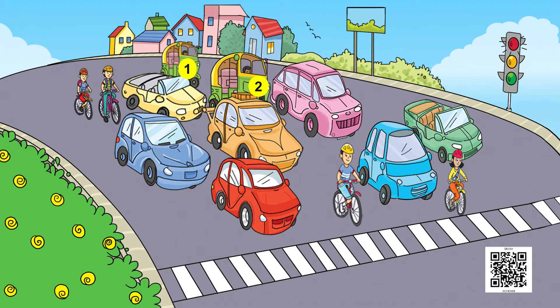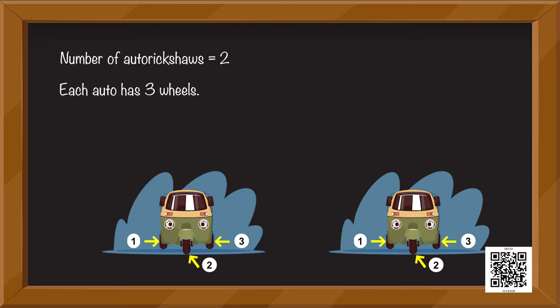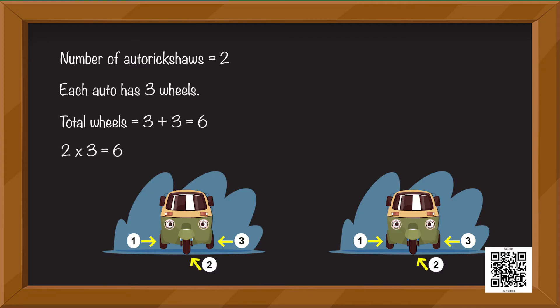Let us do this for auto rickshaws. The number of auto rickshaws that we can see in this picture are two. And each auto rickshaw has three wheels. So total wheels is equal to three plus three which is equal to six. Or two multiplied by three is equal to six.